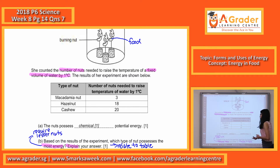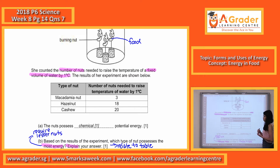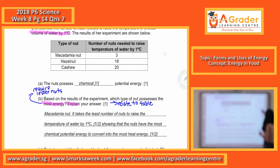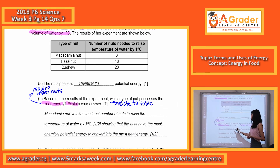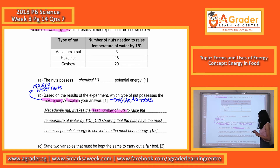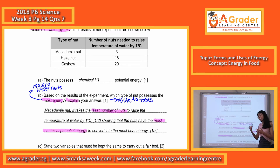It doesn't require many nuts to raise the temperature by 1 degree Celsius. When there is more stored energy, it results in more heat energy being converted. The table shows the least number of nuts needed, meaning the macadamia nut has the most chemical potential energy that can be converted into heat energy. You must mention the energy conversion as well.